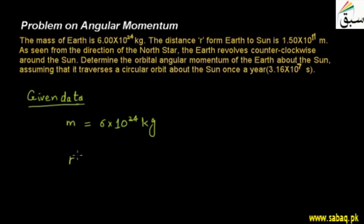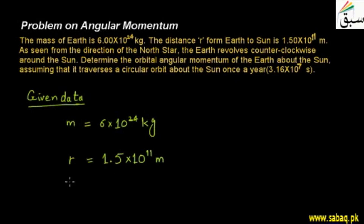And this is the distance R, which we represent as 1.5×10¹¹ meters. This is the distance between the Sun and Earth. We also have the time T = 3.16×10⁷ seconds, which is how we will calculate our orbital angular momentum.